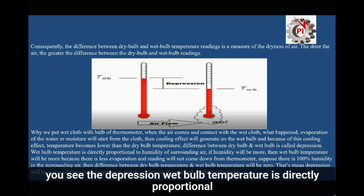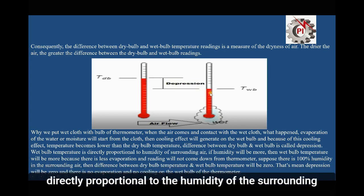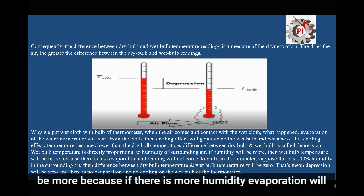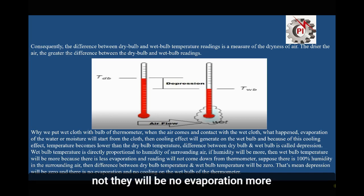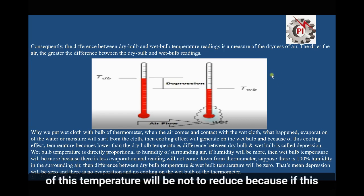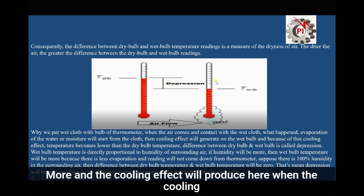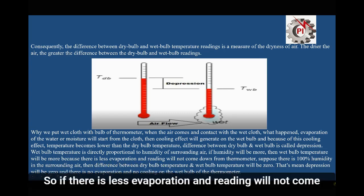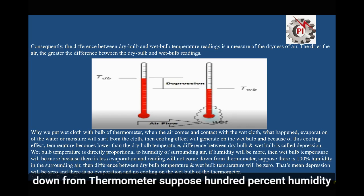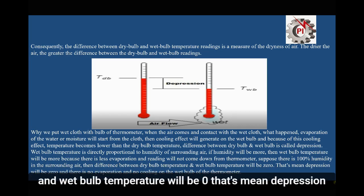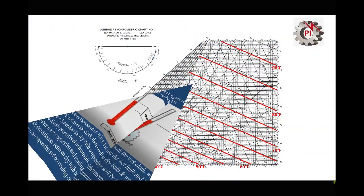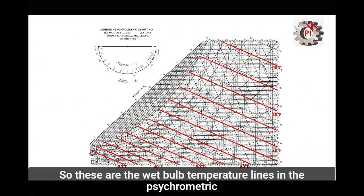Wet bulb temperature is directly proportional to the humidity of the surrounding air. If humidity is more, evaporation will be less, so the cooling effect will be less and the temperature will not reduce much. If the air is drier, evaporation happens more and the cooling effect is greater. Suppose there is 100% humidity — the difference between dry bulb and wet bulb temperature will be zero, meaning no evaporation and no cooling on the bulb. These are the wet bulb temperature lines in the psychrometric chart.